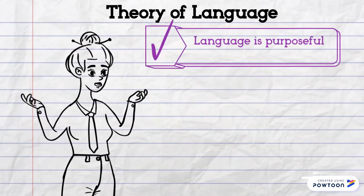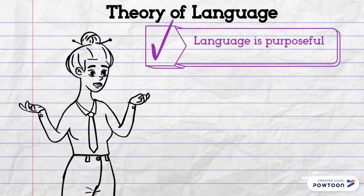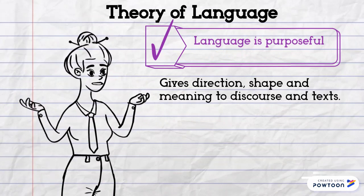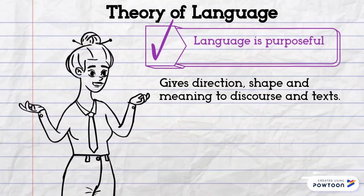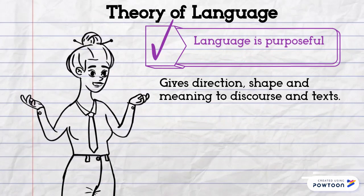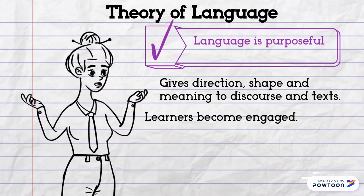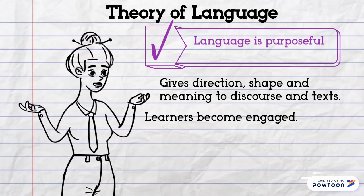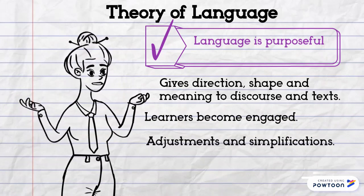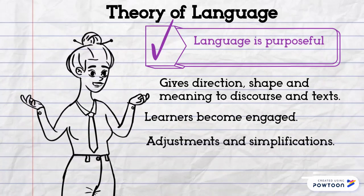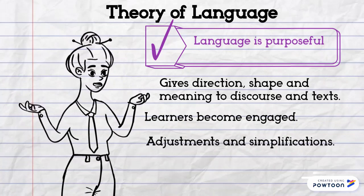Language is purposeful: language is used for specific purposes which give direction, shape, and meaning to discourse and texts. When learners focus on the purpose of the language, they become engaged in the process. In order to make content comprehensible to learners, teachers need to make the same kinds of adjustments and simplifications that native speakers make in communicating with second language learners. The discourse that results is called Foreigner Talk.